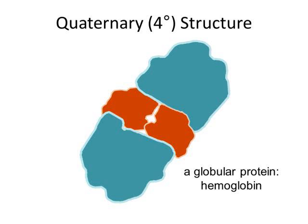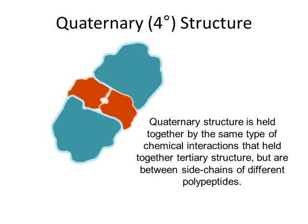The quaternary structure of any protein is held together by the same forces and chemical interactions that held together the tertiary structure. The only difference between quaternary and tertiary structure is that instead of side chains forming hydrogen bonds, hydrophobic exclusion interactions, and ionic or covalent bonds within the polypeptide, they're forming those same interactions between two polypeptides to join them into this functional composite molecule we call the protein.